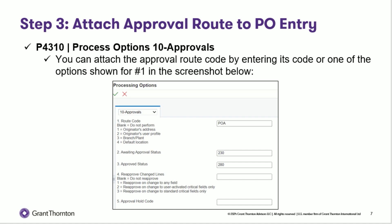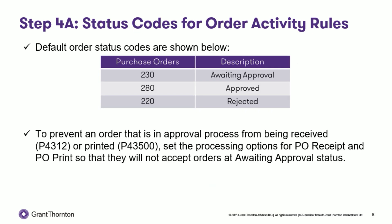Next, we'll look at setting up the order activity rules. Shown here in this table are the default order status codes, which can be changed but must be set in the processing options to match the order activity rules. To prevent an order that is in approval process from being received or printed, set the processing options for PO receipt and PO print so they will not accept orders at awaiting approval status.